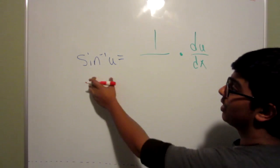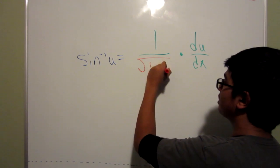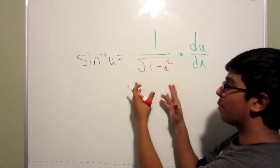To move on, we have to start off at the bottom of the sine, it is root 1 minus u squared. It will always be this for sine and you always have to remember this.